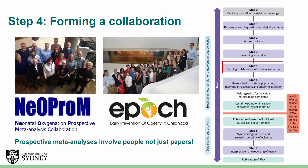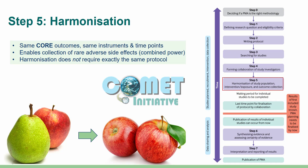As a next step, a collaboration of study investigators is formed. The Neoprom and EPOC collaborations shown here are good examples that prospective meta-analyses involve people and not just papers. This collaboration can then work together to harmonize their studies — or in other words, to turn pears and apples into just apples. Harmonization involves study authors agreeing on common design features, including the collection of common core outcomes measured with the same instruments and at the same time points. Importantly, this also enables the collection of common rare but important adverse outcomes such as rare side effects.